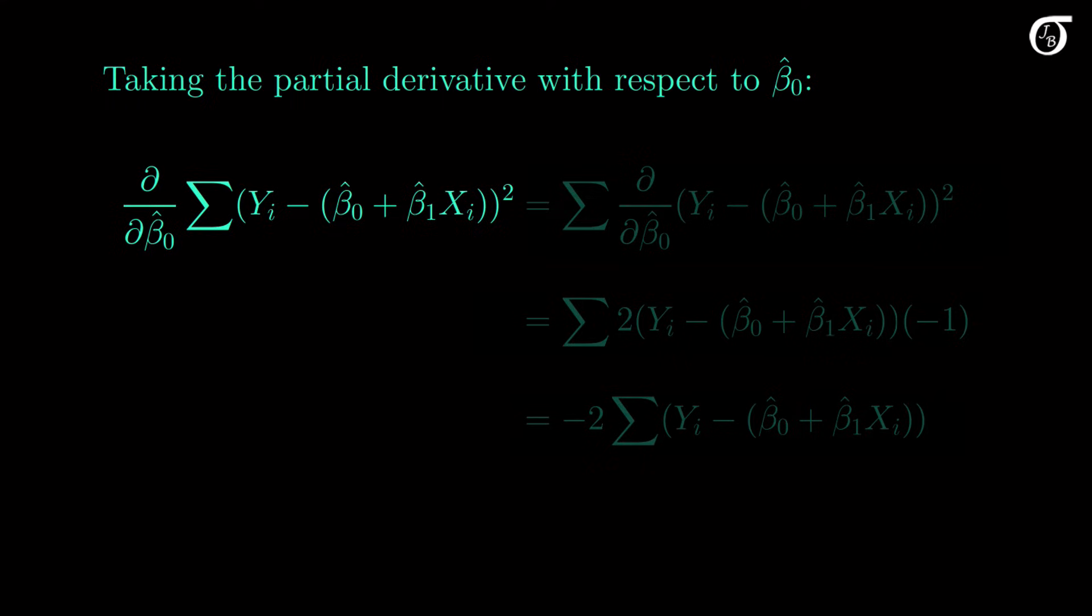Let's start by taking the partial derivative with respect to beta0 hat. First note that the derivative of a sum is the sum of the derivatives, so we can take the derivative inside the summation. Now we've got a squared term, so by the power rule the 2 comes down and the exponent disappears. Well, it becomes 2 minus 1, or 1.